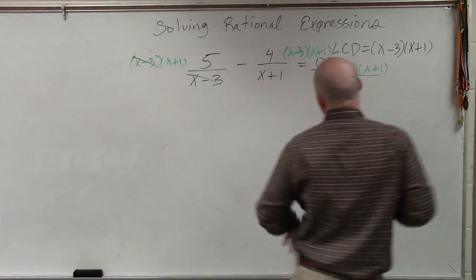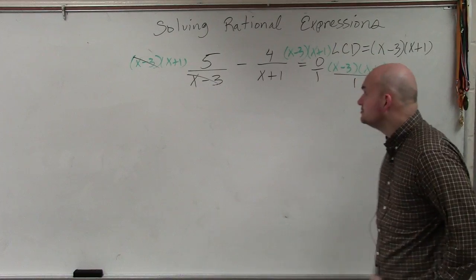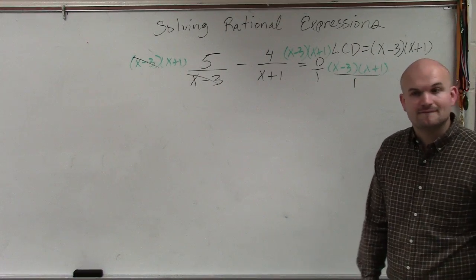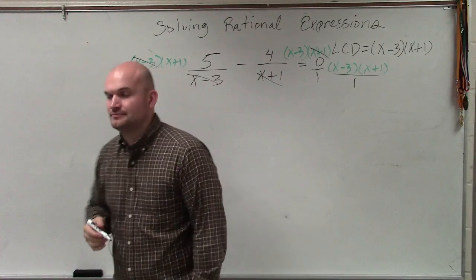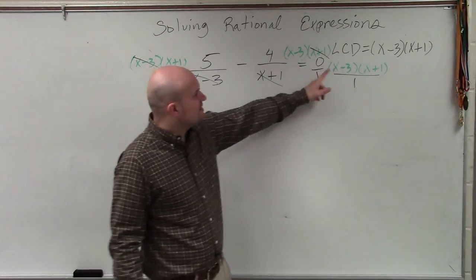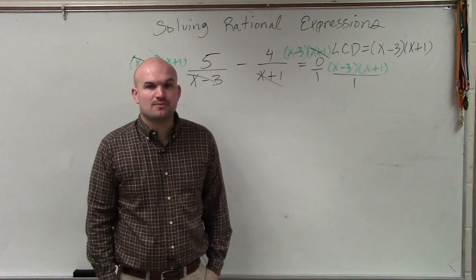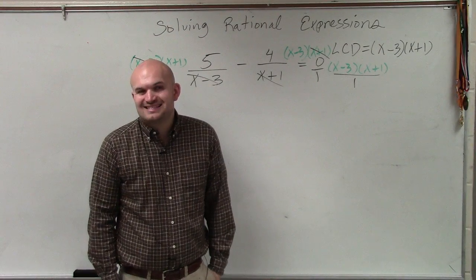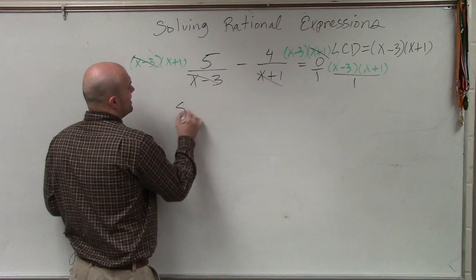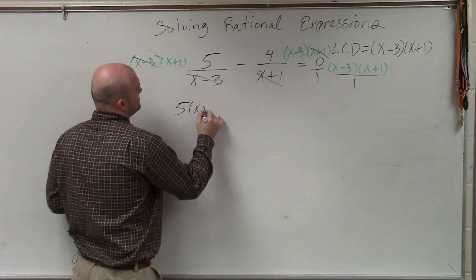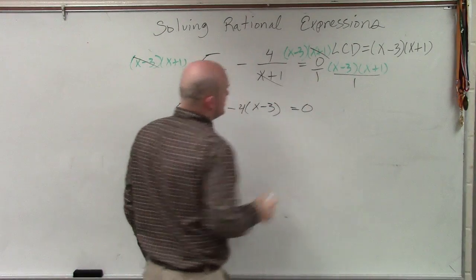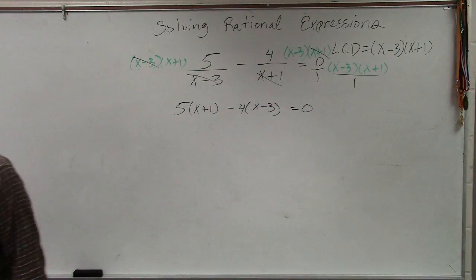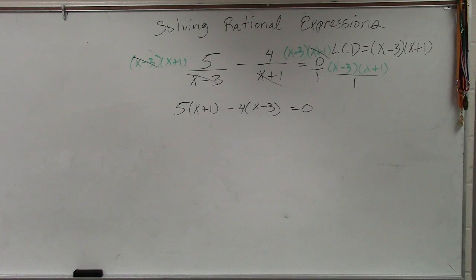Does x plus 1 divide into x minus 3 times x plus 1? Yeah. How many times? x minus 3 times. And then, 0 times x minus 3 times x plus 1 is just going to be 0. So therefore, now I have 5 times x plus 1 minus 4 times x minus 3 is equal to 0. So if it's 0, you're going to have to count it. Well, I mean, you are times it, but it's just going to be 0, yes.